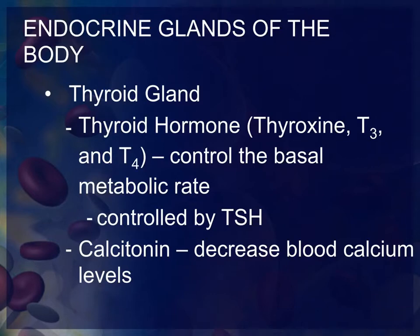The thyroid gland is under the control of TSH, the thyroid stimulating hormone. The other hormone the thyroid gland produces is calcitonin, and its job is to decrease blood calcium when there are too high levels of calcium in the blood. Recall from the skeletal system that one function of bone is to store calcium until it is needed, so calcitonin allows calcium to move from the blood and be stored into the bone.